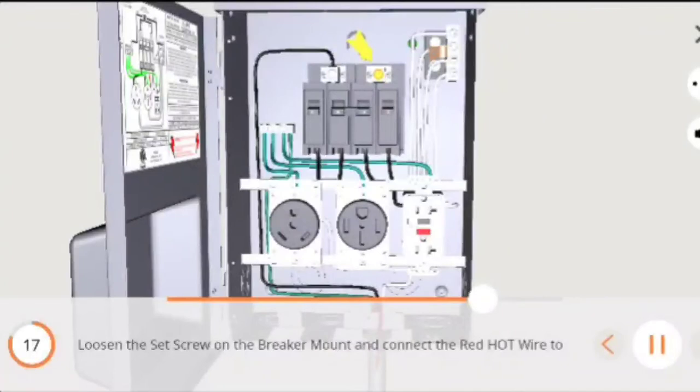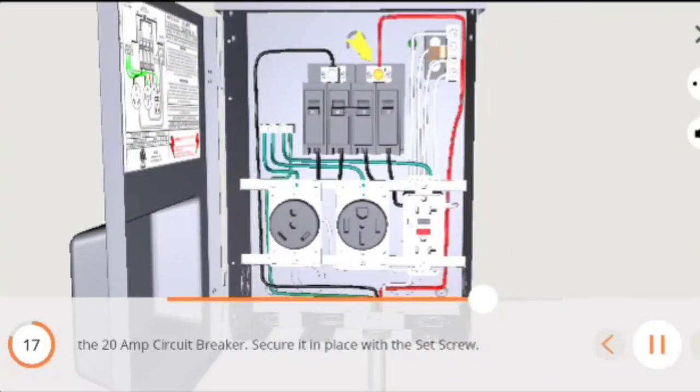Loosen the set screw on the breaker mount and connect the red hot wire to the 20 amp circuit breaker. Secure it in place with the set screw.